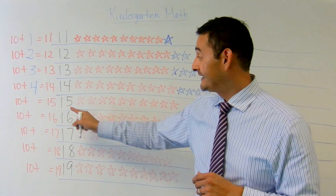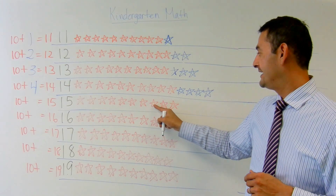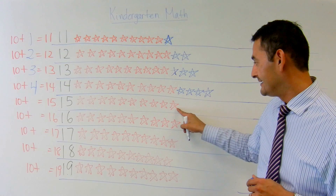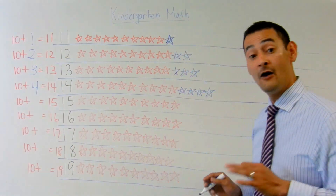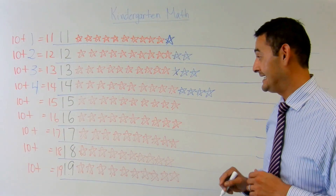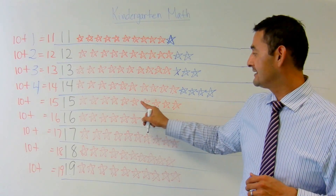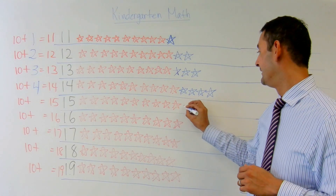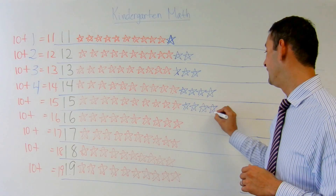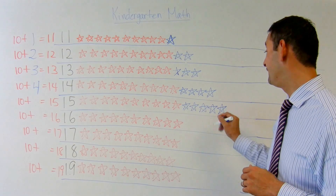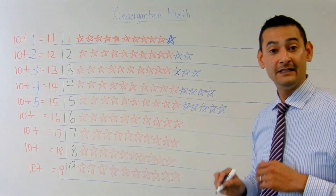Now let's take a look at 15. 1, 2, 3, 4, 5, 6, 7, 8, 9, 10 ones plus how many more is going to equal 15. 1, 2, 3, 4, 5, 6, 7, 8, 9, 10 plus 1, 2, 3, 4, 5 ones is going to equal 15.